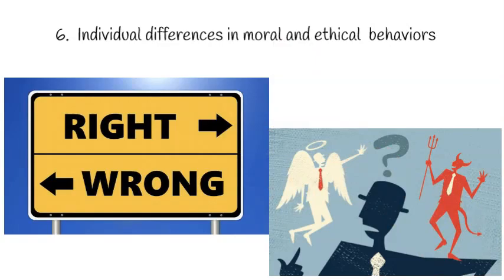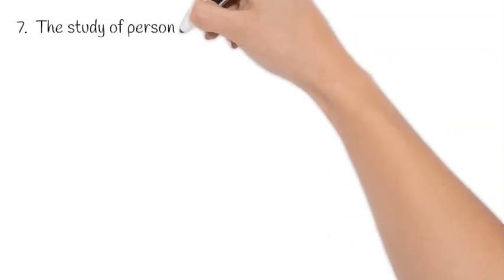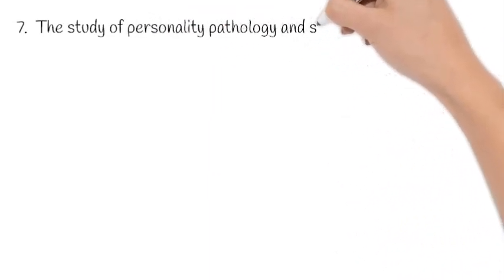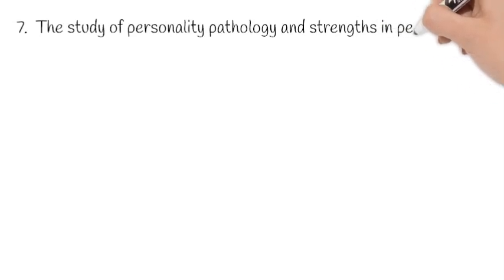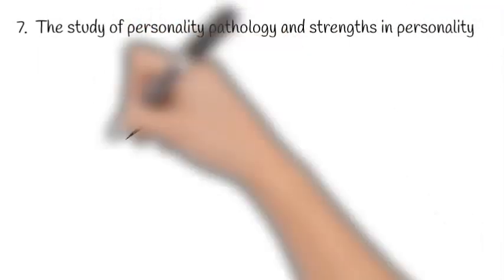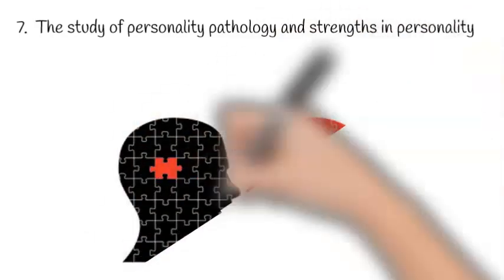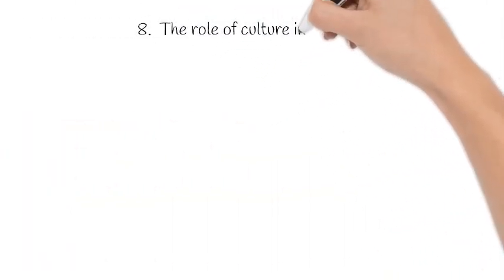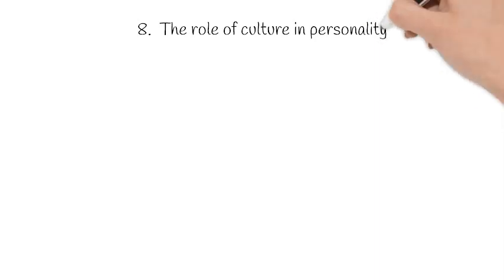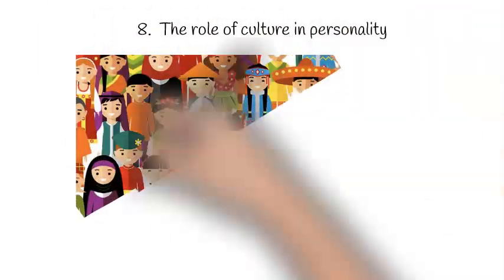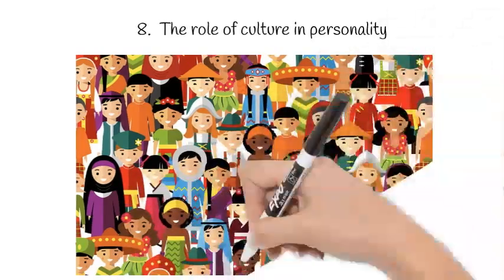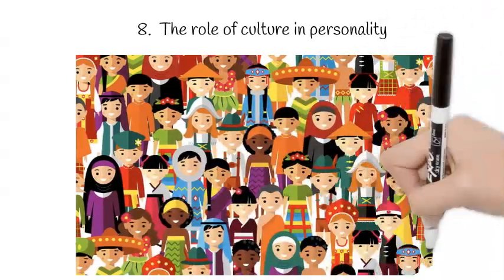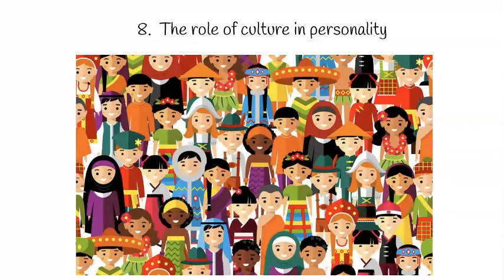It is important to understand moral and ethical behaviors because they have such a big implication in our societies. A seventh current issue is the importance of not just focusing on personality pathology, but also on the strengths and virtues of the human personality. What are the character strengths that cause people to live seemingly extraordinary lives, and how can we develop them? Finally, the eighth issue is the importance of understanding culture and its influence on personality. Even though many theories claim cross-cultural applicability, it is important to focus on individual differences that are the result of culture.